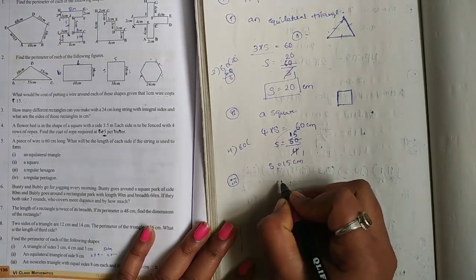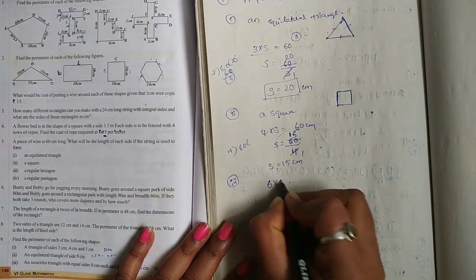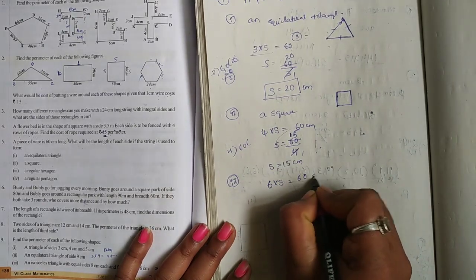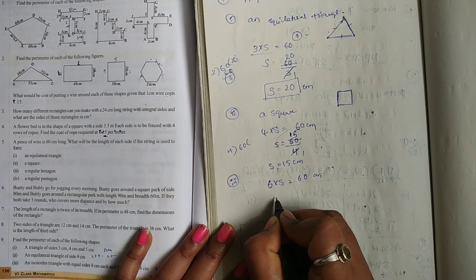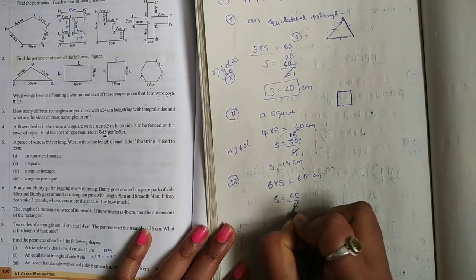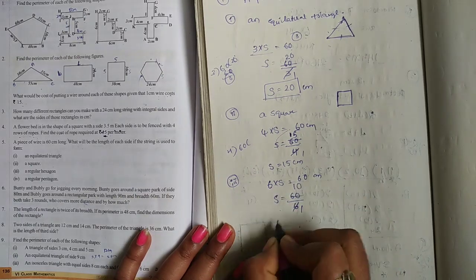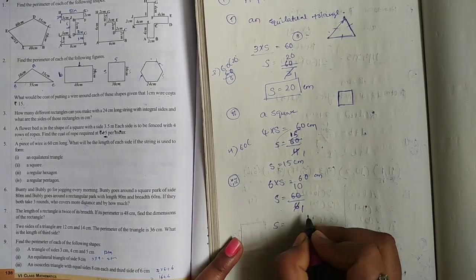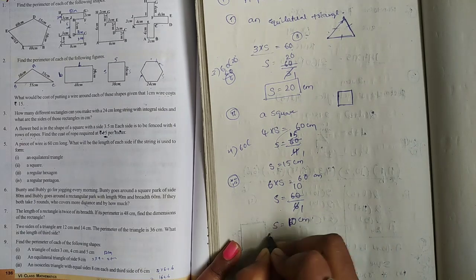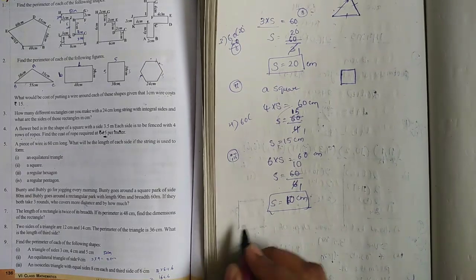Third one: regular hexagon. S is equal to 60 by 6, so S is equal to 10 cm. Hexagon side is equal to 10 cm.